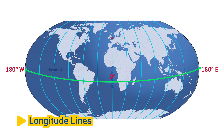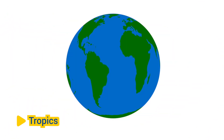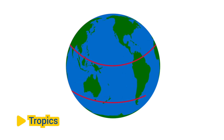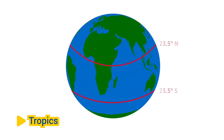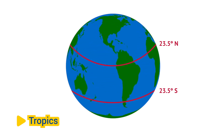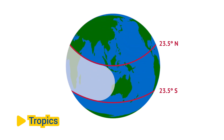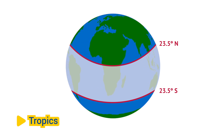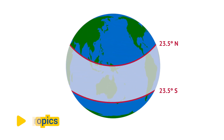Tropics: The Tropic of Cancer and the Tropic of Capricorn are imaginary lines located at approximately 23.5 degrees north and south latitude, respectively. These lines mark the northernmost and southernmost points where the Sun can appear directly overhead at noon on the summer solstice.